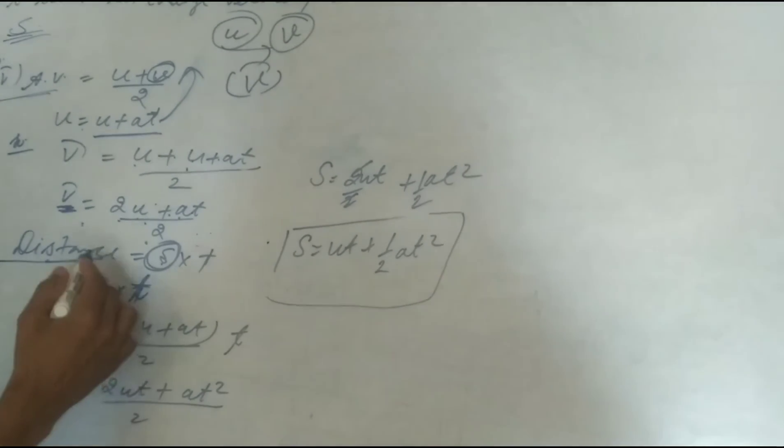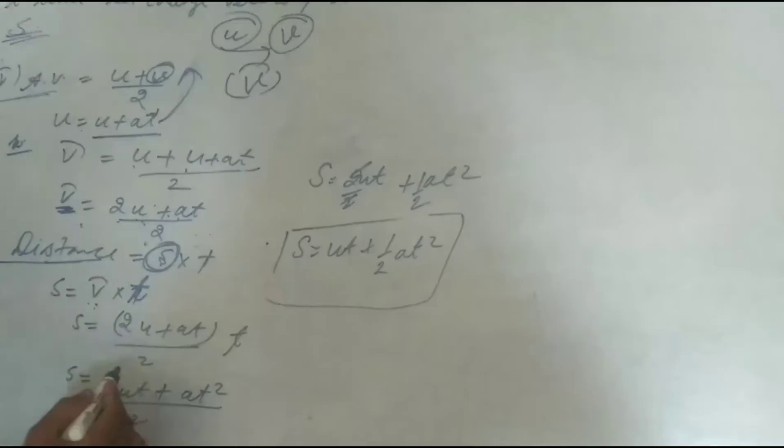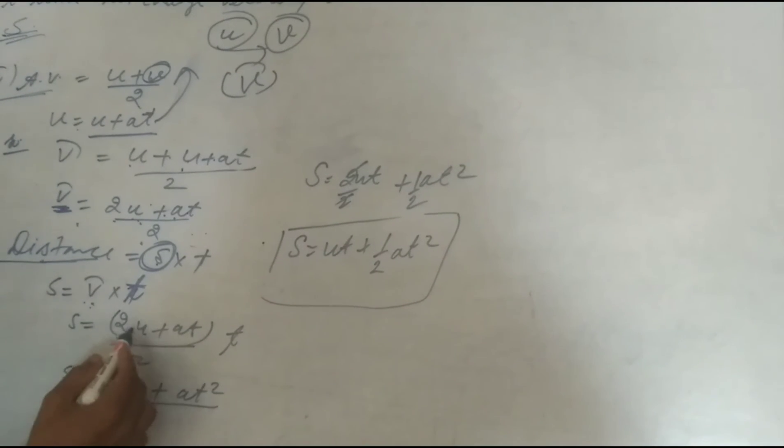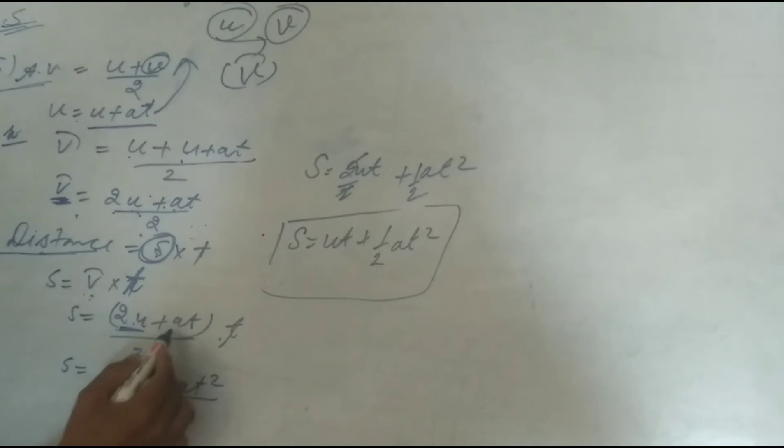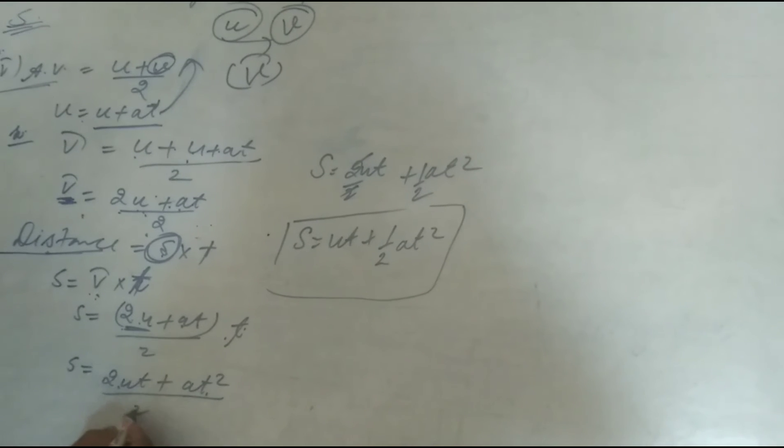So the v bar, the value of v bar is equal to 2u plus at. Put here, 2u plus at and multiply 2ut, 2ut, at into at, at square upon 2.